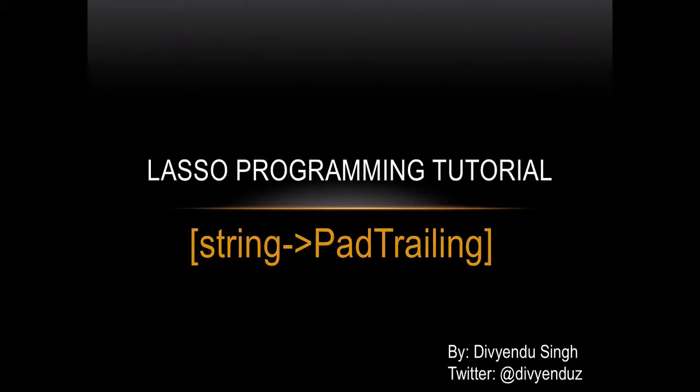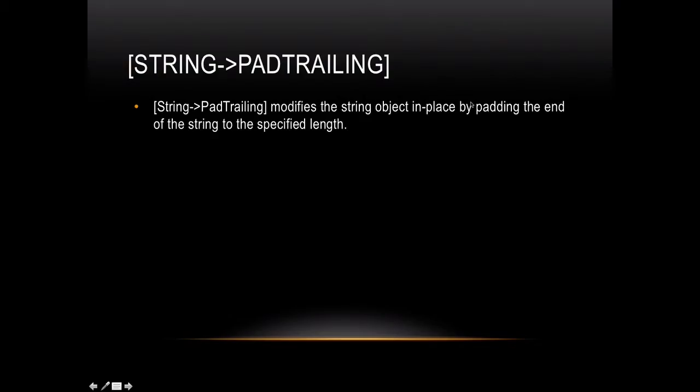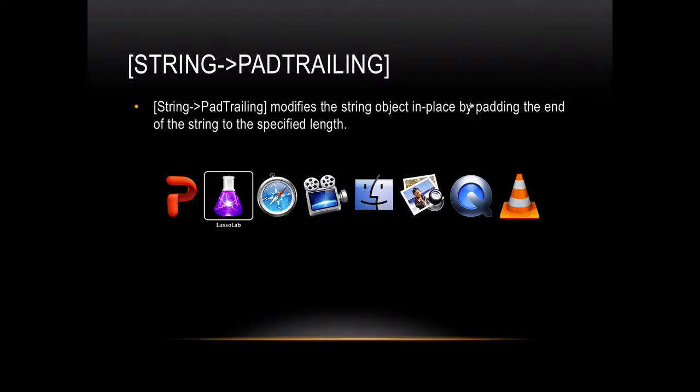Let's talk about the pad tailing function of the string object in Lasso programming. This function modifies the string object in place by padding the end of the string to the specified length. I'll show you an example.